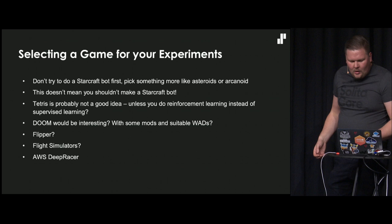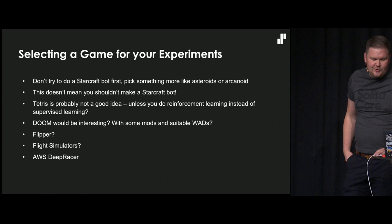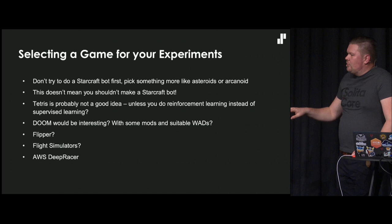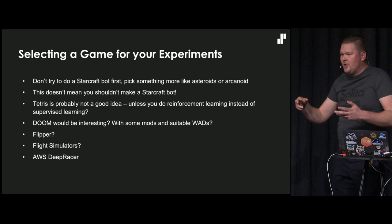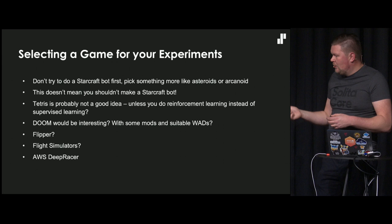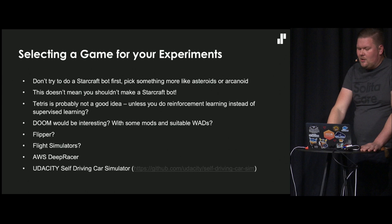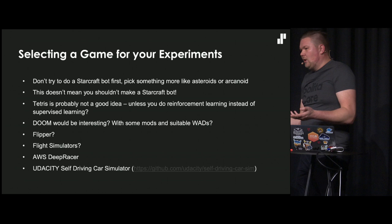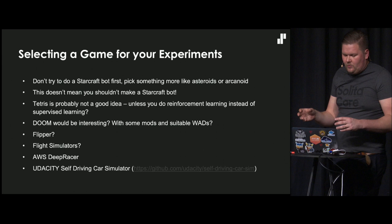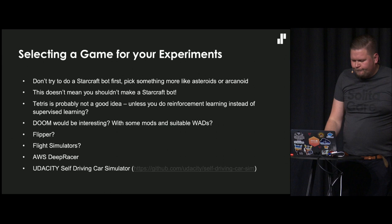AWS has DeepRacer, which is a reinforcement learning infrastructure where you try to optimize your DeepRacer car to go through a road. They have a simulator for training your models and it's really easy to use. Udacity has made a self-driving car simulator thing especially meant for testing out self-driving car concepts.